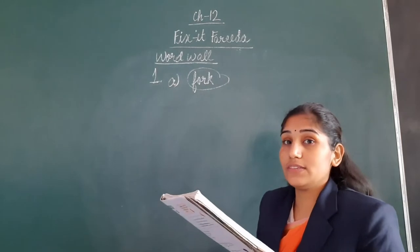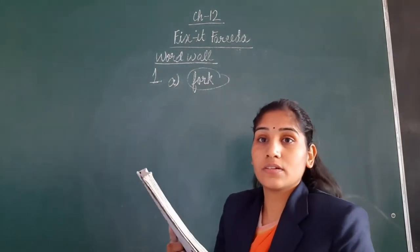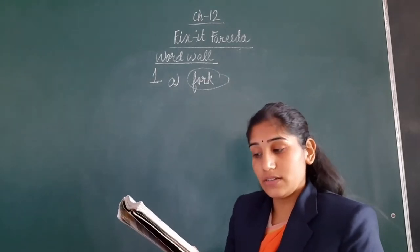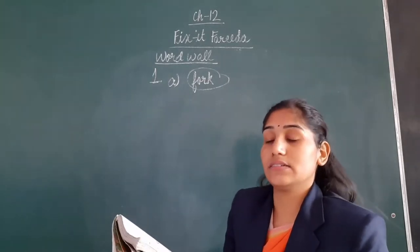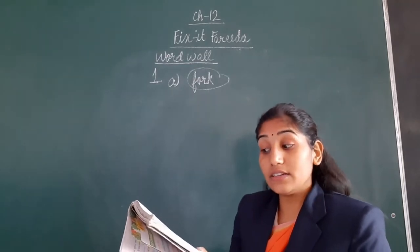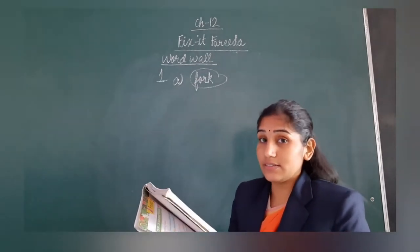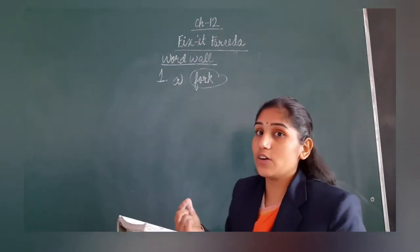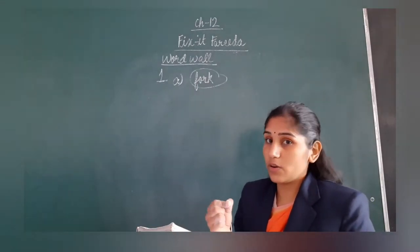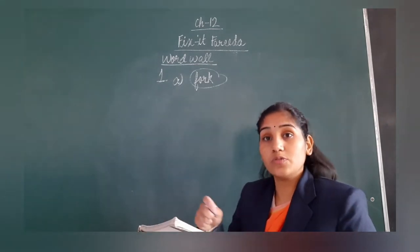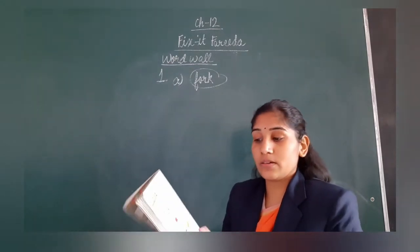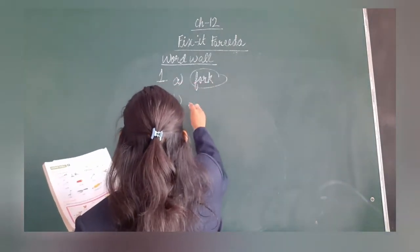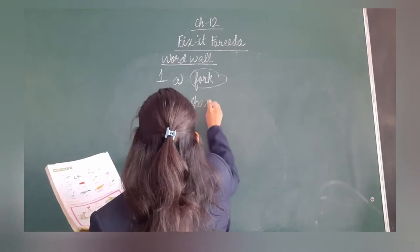Now let us move to the 2nd part. Needle, thread, spade, and scissors. Needle, thread, and scissors are used for sewing. You would have seen your mother sew some clothes or a tailor who sews. So spade would be the odd one. So in part B, we will circle spade.